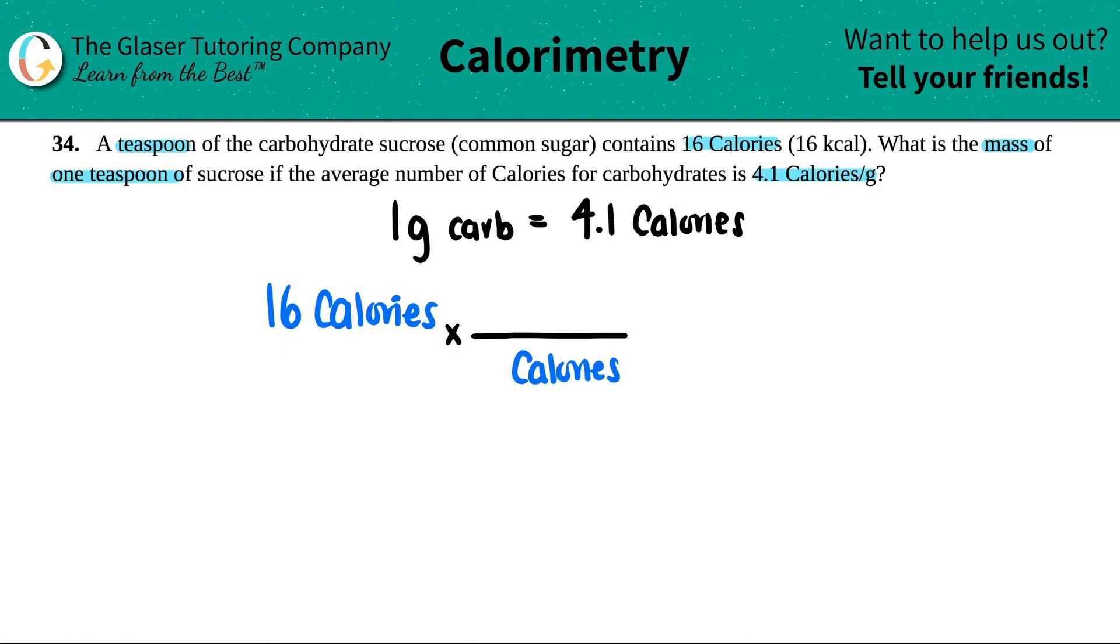So calories goes on the top. They're asking for what is the mass of one teaspoon. So a mass is grams. And now just use this information for every one gram of carbs that we ingest and metabolize, our body will be able to produce 4.1 calories to use.